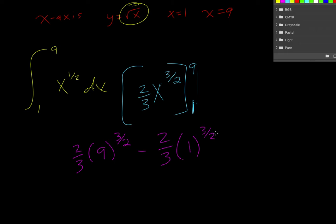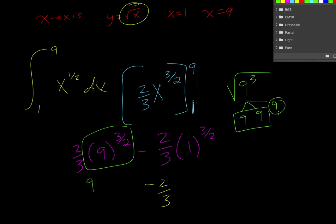Okay, so one raised to anything is just one, one times two-thirds is two-thirds, so we still have that piece. Now this is a little bit more tricky because I'm going to think of this piece as nine raised to the third under a square root. So if I break that up it's going to be nine times nine times nine. Have a pair of nines so that can come out, and then nine can be written as three times three.